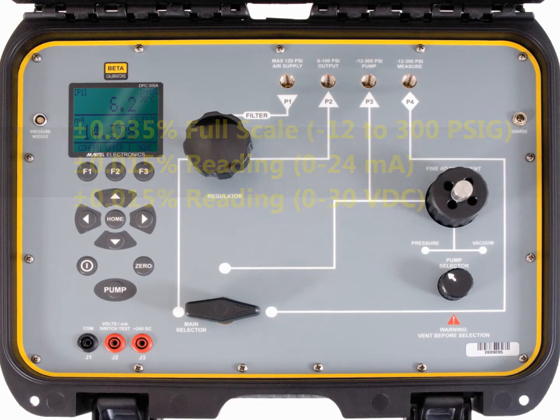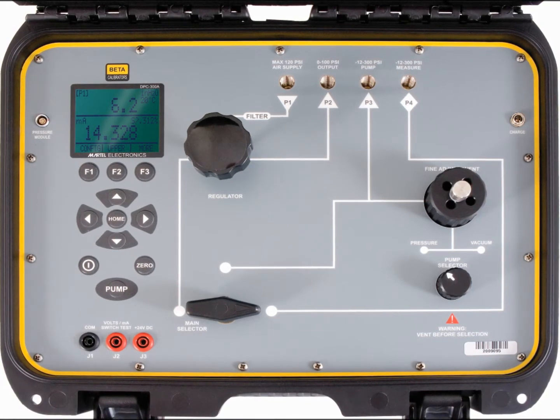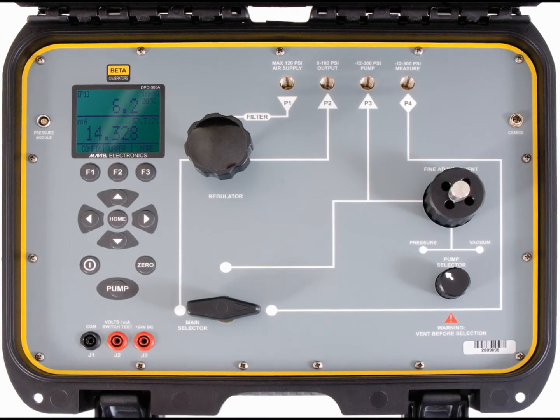The DPC-300A can power up a 24-volt loop and read milliamps back. It has selectable engineering units and several features that make calibration a snap.